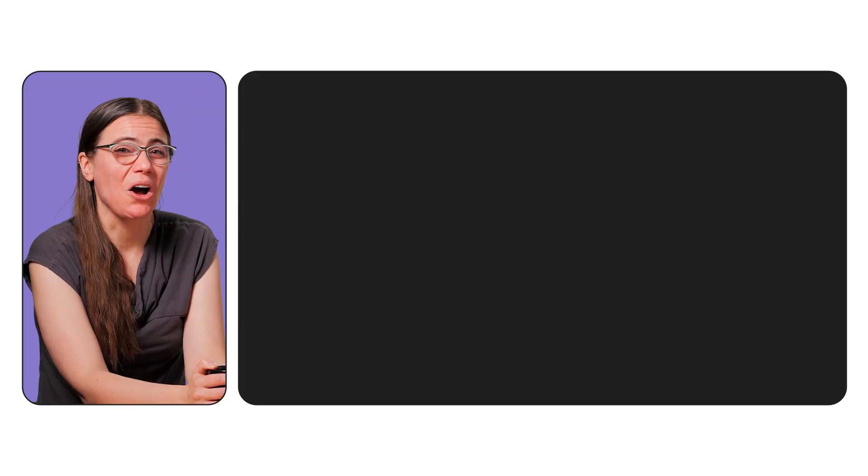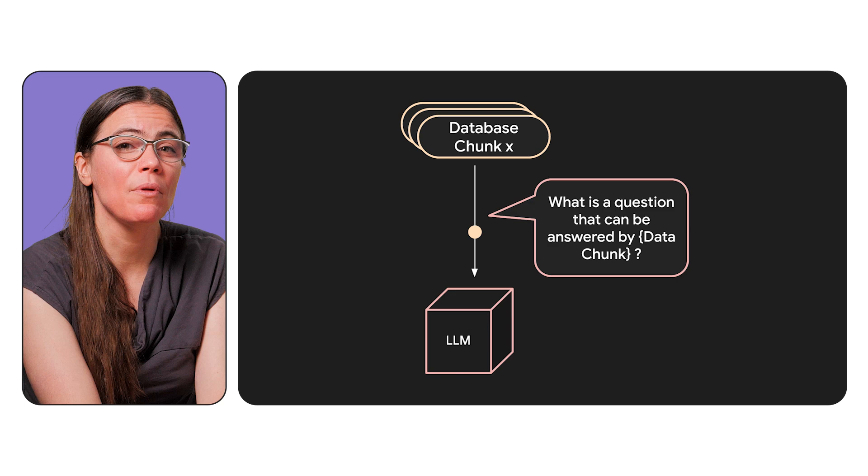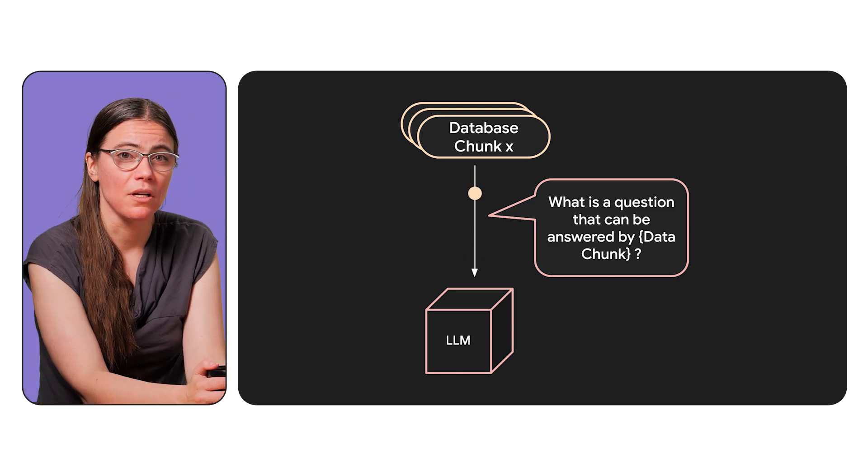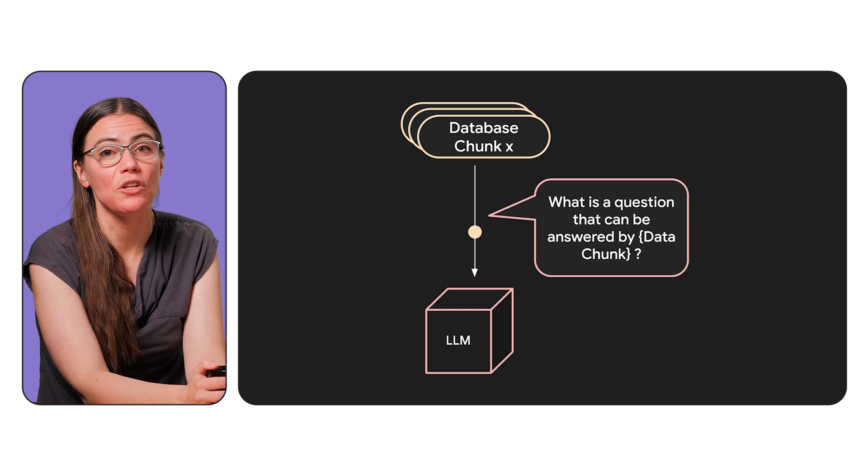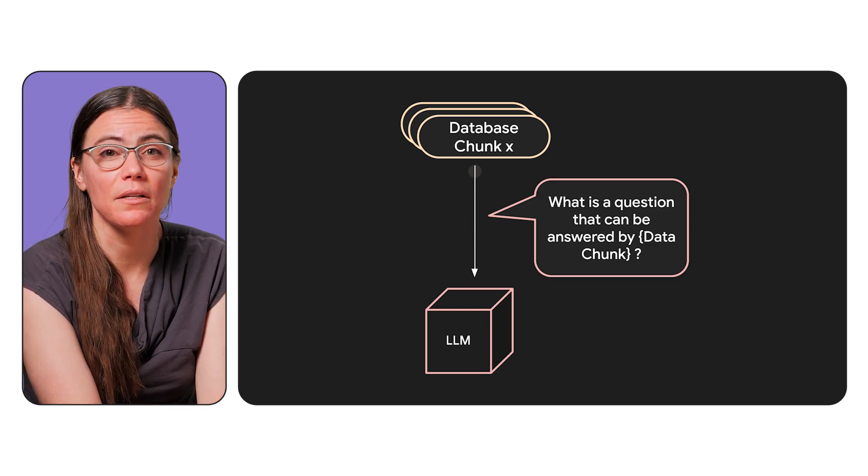Another technique takes advantage of the fact that questions or prompts and answers or responses often use different words in different order. In this technique, when you pre-process your data, you ask the LLM to generate a hypothetical question or prompt that could be answered by a specific chunk of data that you are processing. Then you store this question along with the data. When you need to find information relevant to a user's prompt, you search for similarity in the hypothetical questions instead of, or in addition to, looking for similarity in the raw chunks.